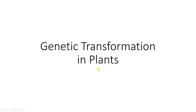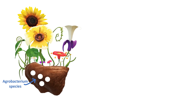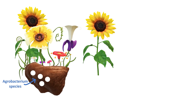Today we are going to discuss how genetic transformation works in plants. For instance, let's take a single plant sample. There are different soil-borne bacteria such as Agrobacterium, and the question arises: how can we insert this Agrobacterium into the plant?